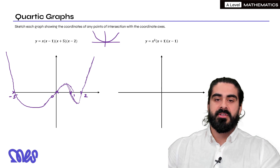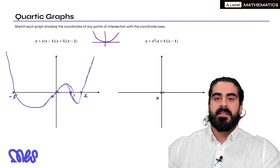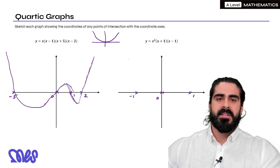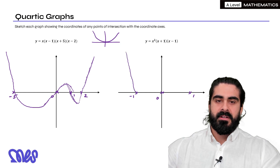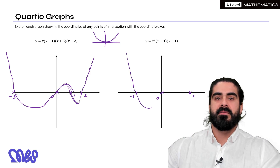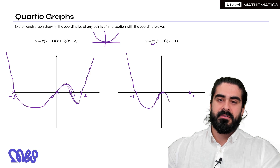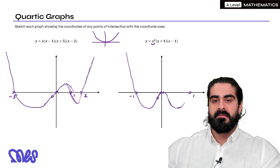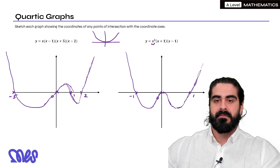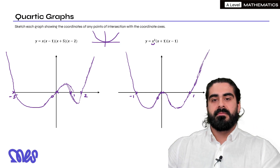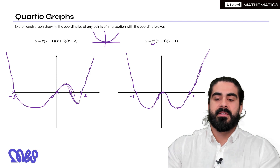The next one: in that one the y-intercept is 0 because there's an x on the outside. Next one: x squared times x plus 1 times x minus 1. x squared means the root would be at 0, then x plus 1 and x minus 1 give roots at 1 and minus 1. It's going to come down, then turn. Here we have to be careful — it's x squared, it's a double root, so it's only going to touch the axis and come back down, then make its way back up. This is a symmetrical quartic about the y-axis.